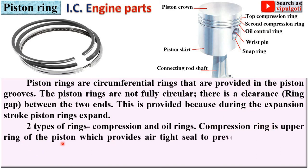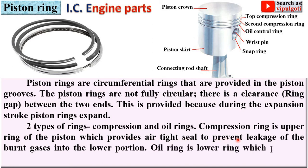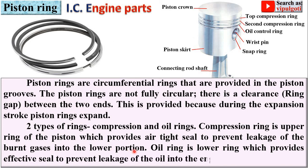There are two types of rings: compression ring and oil ring. The compression ring is the upper ring of the piston and provides an airtight seal to prevent leakage of burnt gases into the lower portion. The oil ring is the lower ring and provides an effective seal to prevent leakage of oil into the engine cylinder. The top two rings are called compression rings and the bottom ring is called the oil ring.